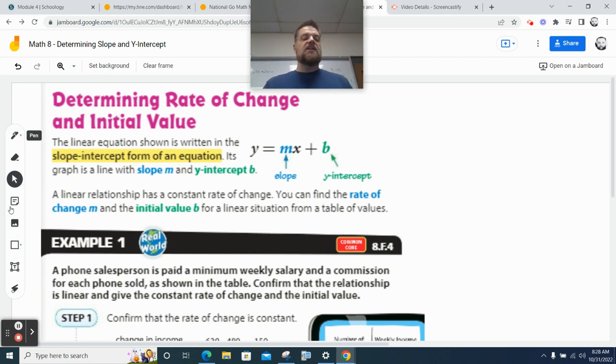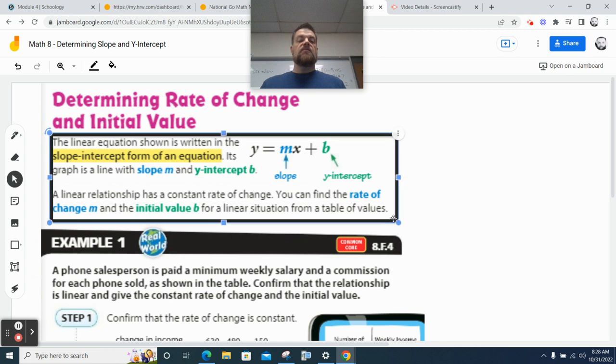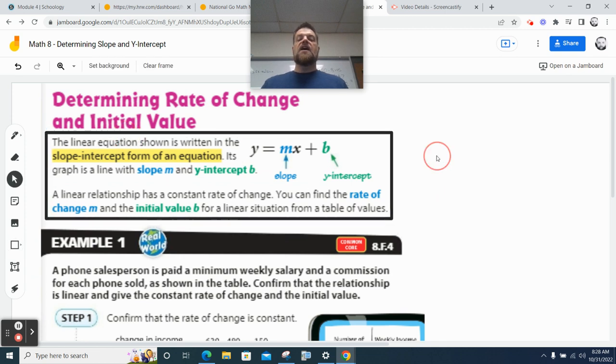What I want you guys to do is the same thing that we did on the last example problem. I want you to read this stuff. Underline words that you don't know the definition of, like you don't know what the word means, and circle phrases that you think are important, okay?